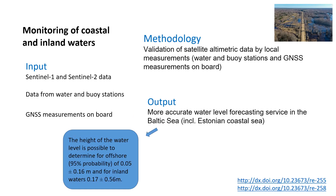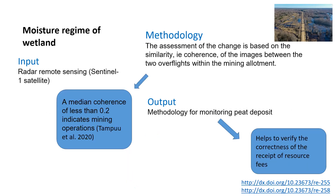The next prototype validates satellite altimeter data by local measurements — water and buoy stations — and GNSS measurements on board. A research vessel was used for the GNSS measurements. The output of this prototype is more accurate water level forecasting surveys in the Baltic Sea, including the Estonian Coastal Sea. The last prototype from the water work package is moisture regime of wetlands. Scientists discovered that we can get information about mining operation activities by assessing changes in the moisture regime of wetlands. They used images between two overflights within a mining allotment. A median coherence of less than 0.2 indicates mining operations. This knowledge helps to verify the correctness of the receipt of resource fees.